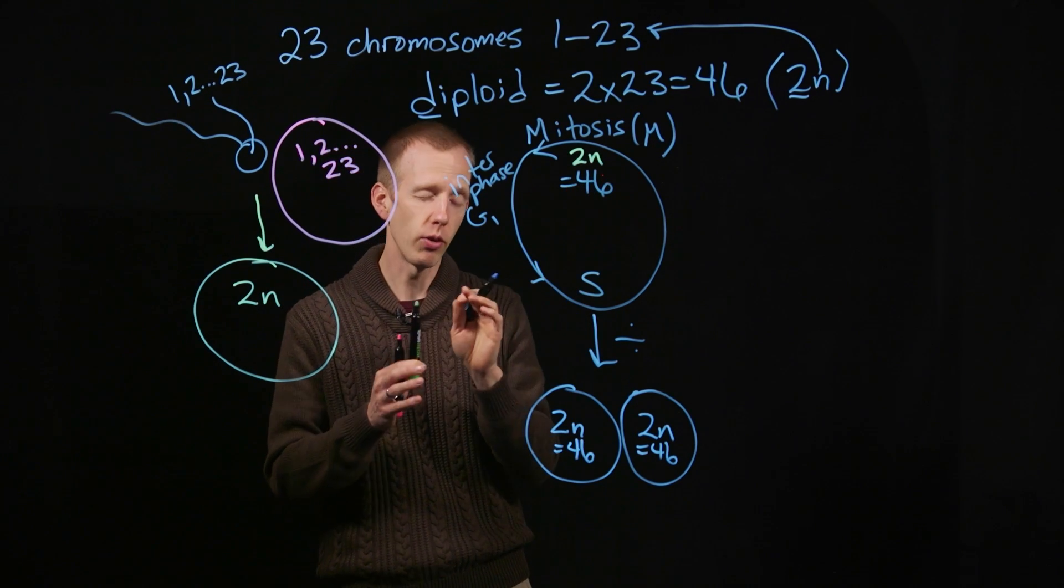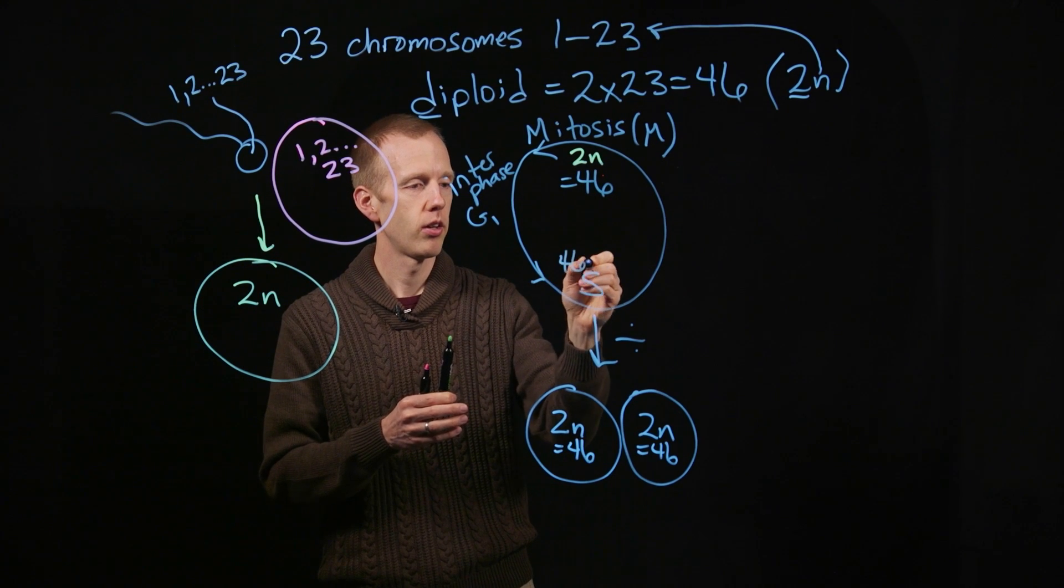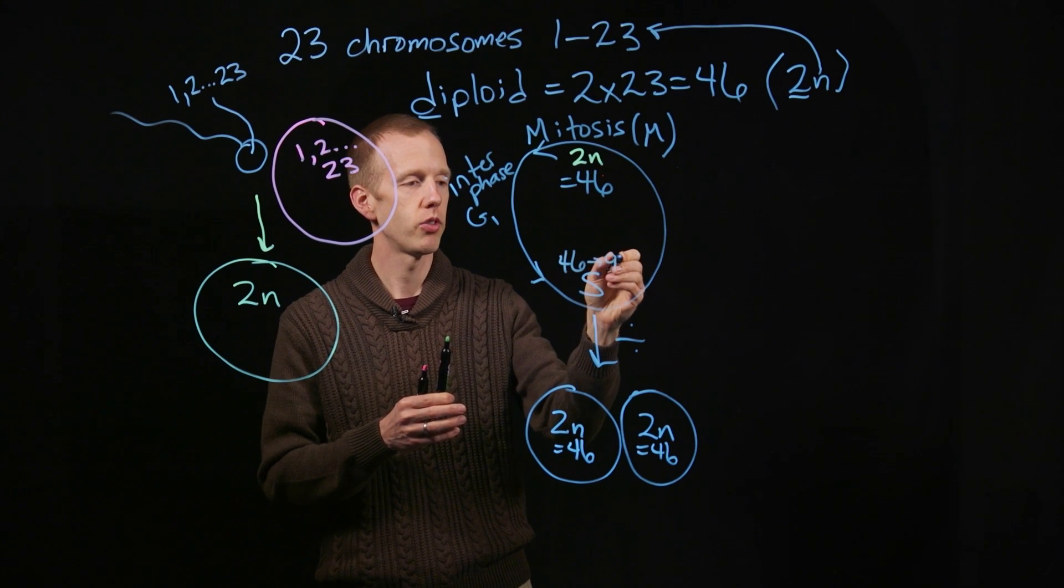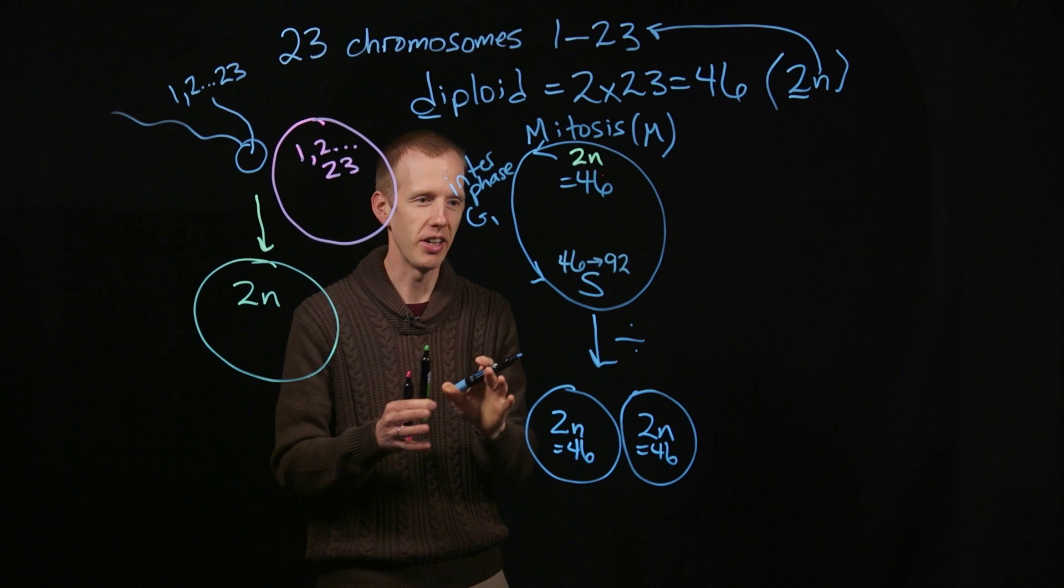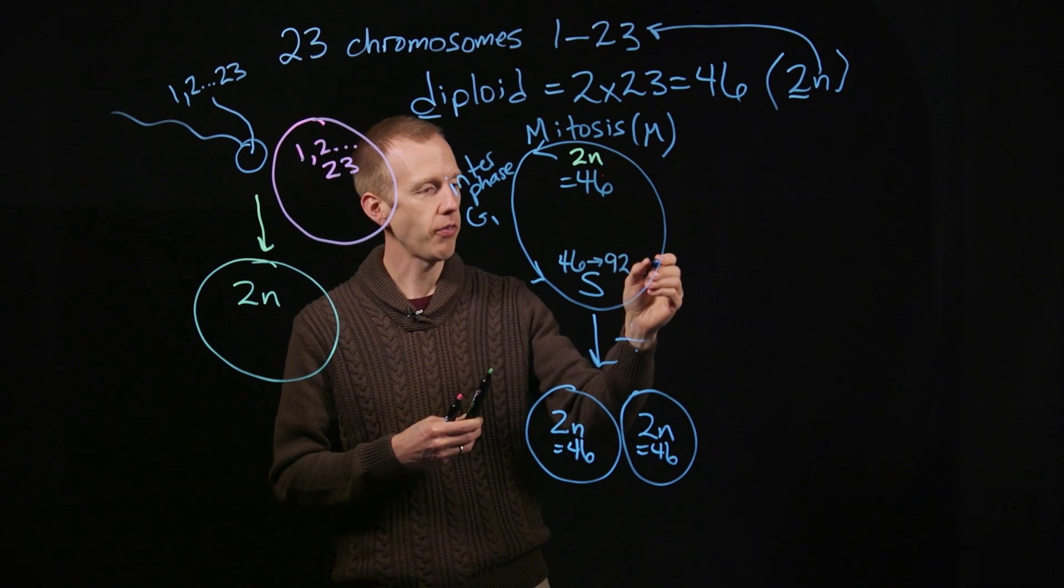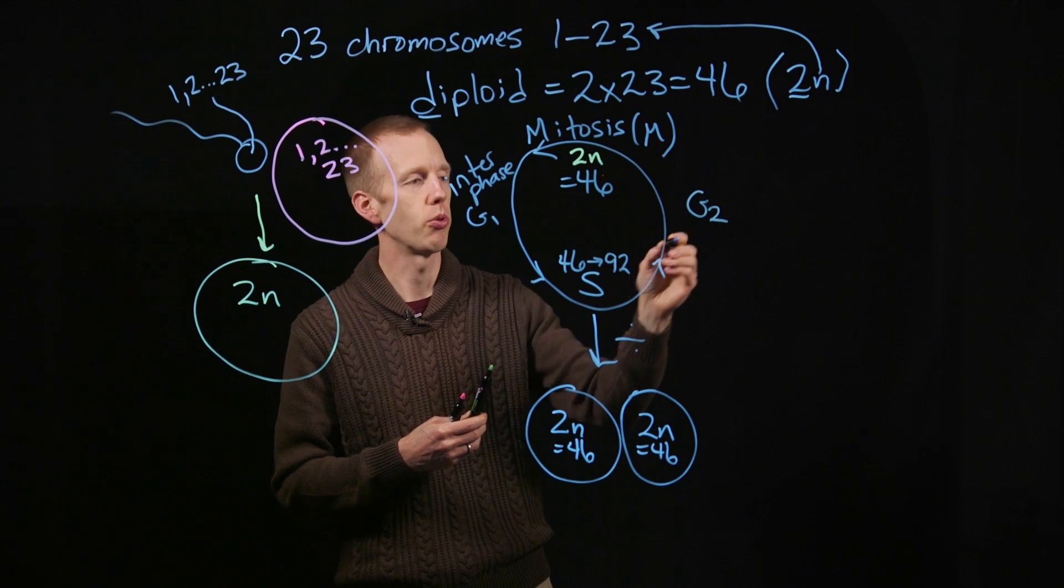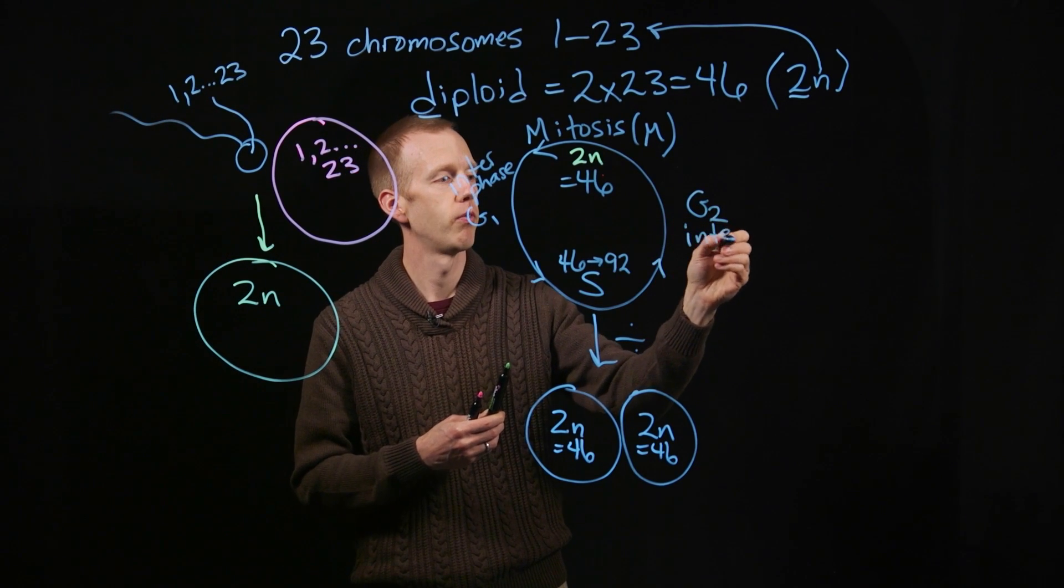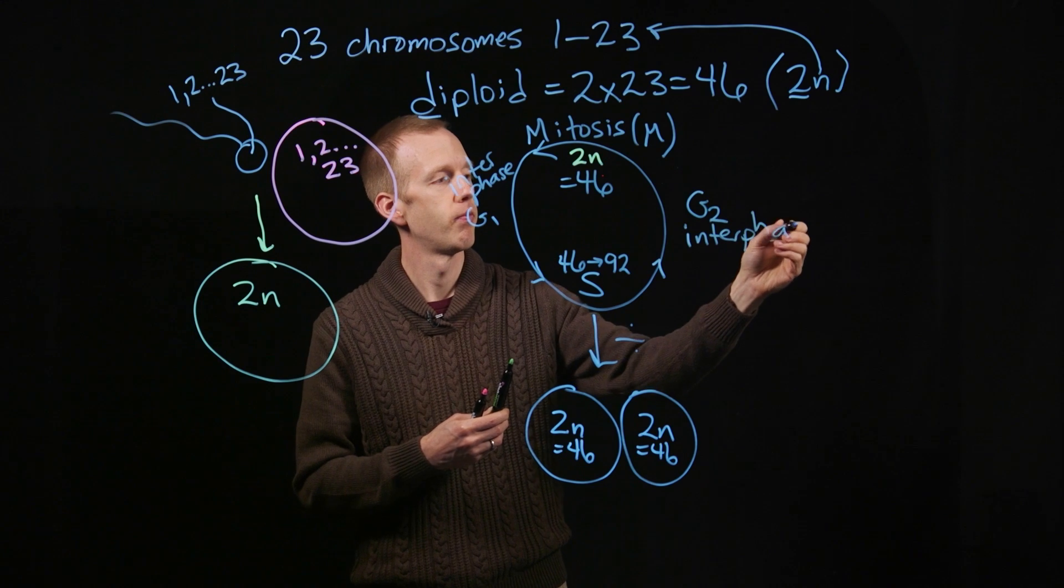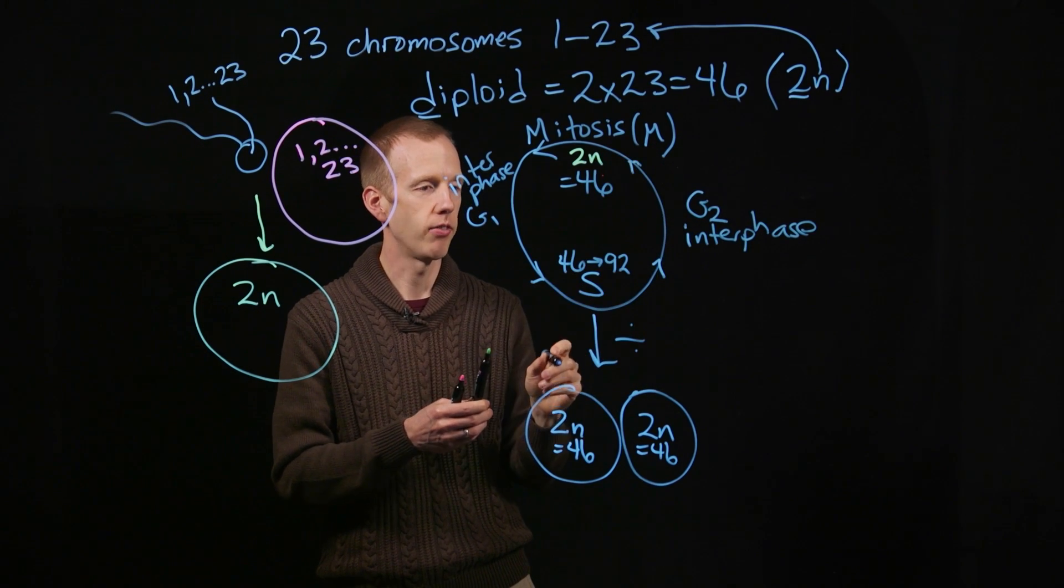So these 46, every one of those 46 chromosomes, is copied. So now this cell temporarily has 92 chromosomes. After that part of the cell cycle, there's another stage of interphase, growth 2, or G2. And then the cell enters mitosis and divides.